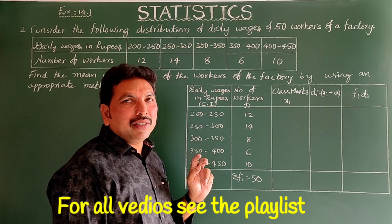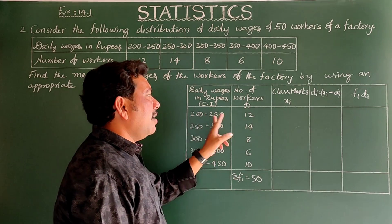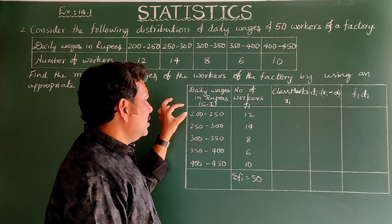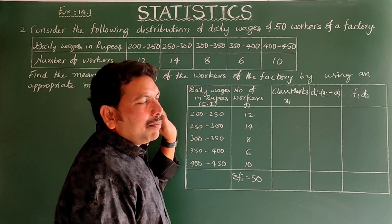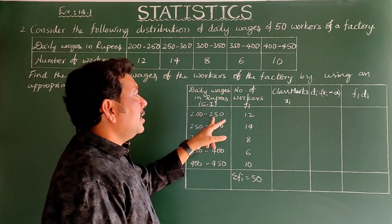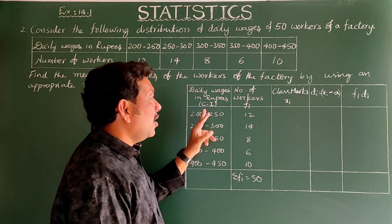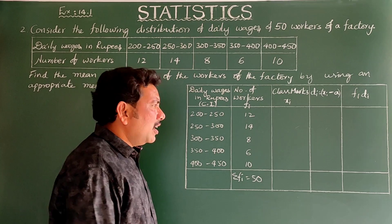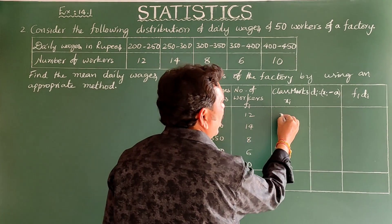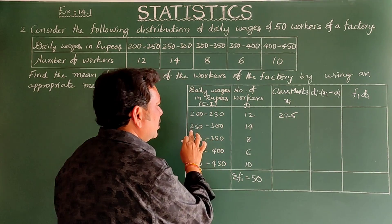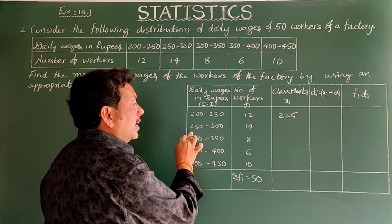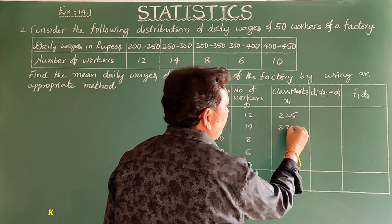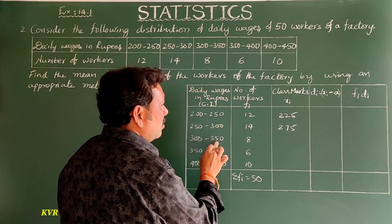The class marks (xi) are calculated as the midpoint: lower class limit plus upper class limit divided by 2. So: (200+250)/2 = 225, (250+300)/2 = 275, (300+350)/2 = 325, (350+400)/2 = 375, and (400+450)/2 = 425.